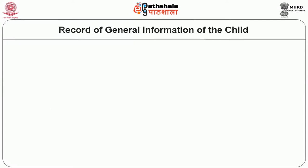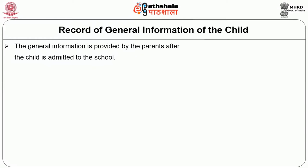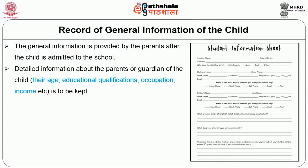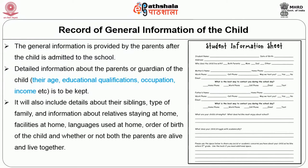The general information is provided by the parents after the child is admitted to school. Detailed information about the parents or guardian of the child such as their age, educational qualification, occupation and income is also to be kept. It will also include details such as siblings, type of family, information about relatives staying at home, facilities at home, the languages used at home, the order of birth of the child, and whether or not both parents are alive and living together.